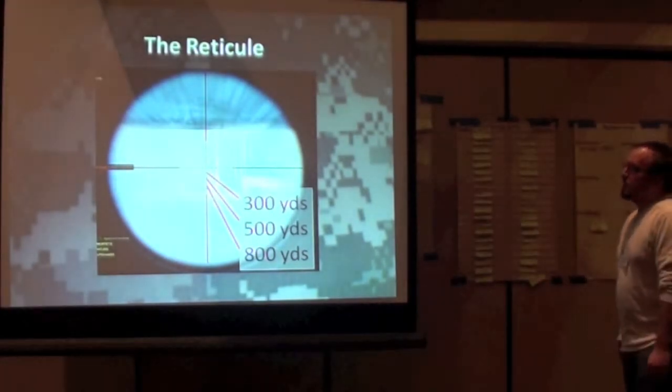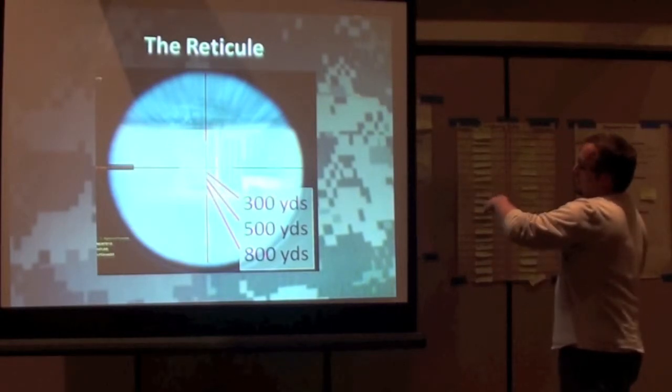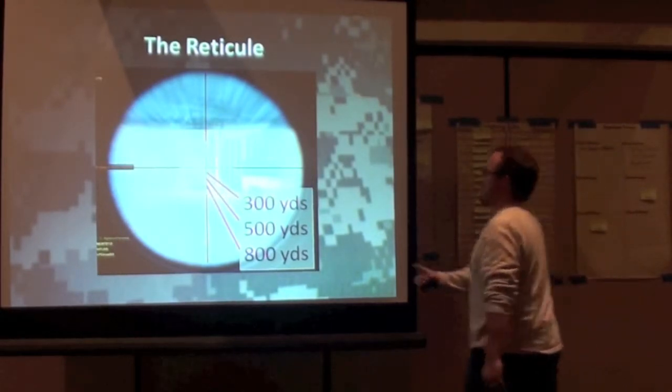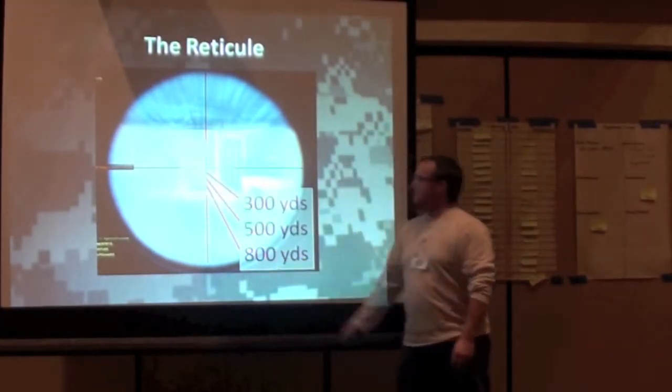So how do you compensate for bullet drop? Use your reticle. Basically the reticles, some of them have tick marks, which are great. So what you have to do is aim for the guy up here if he's at 300 yards, here for 500 yards, and here for 800 yards.